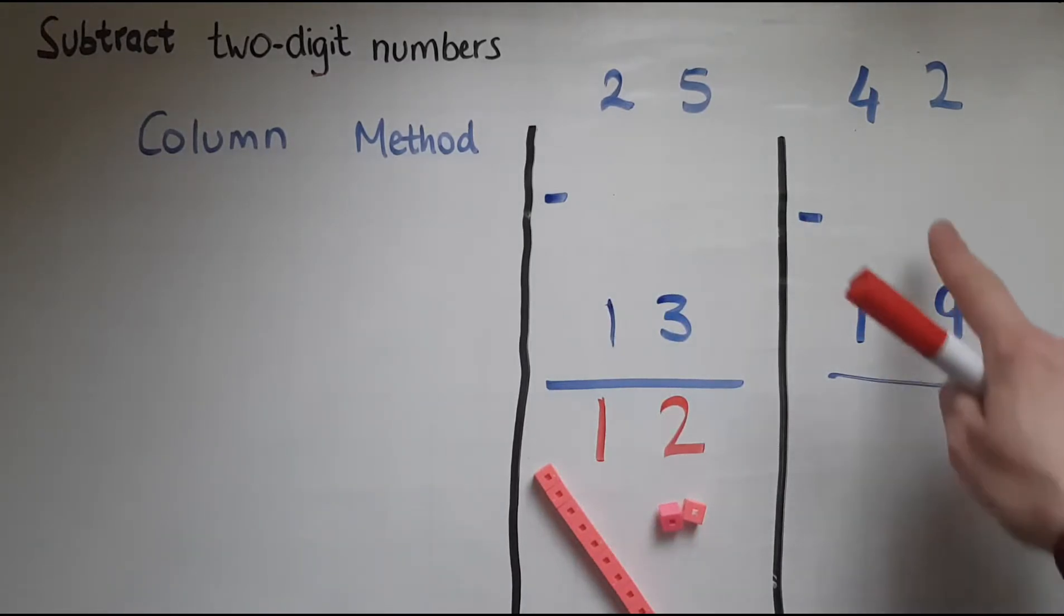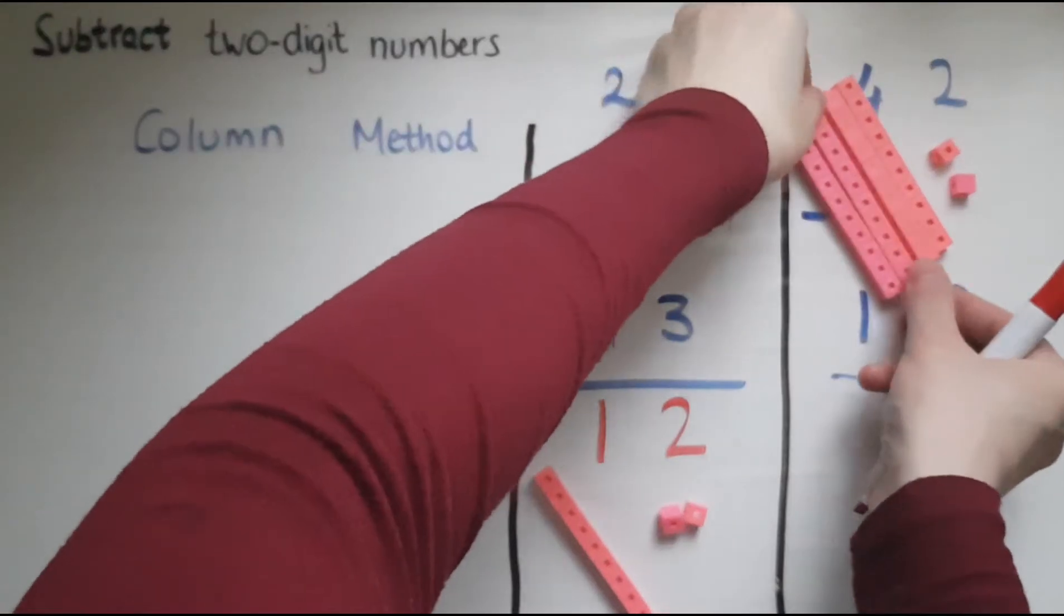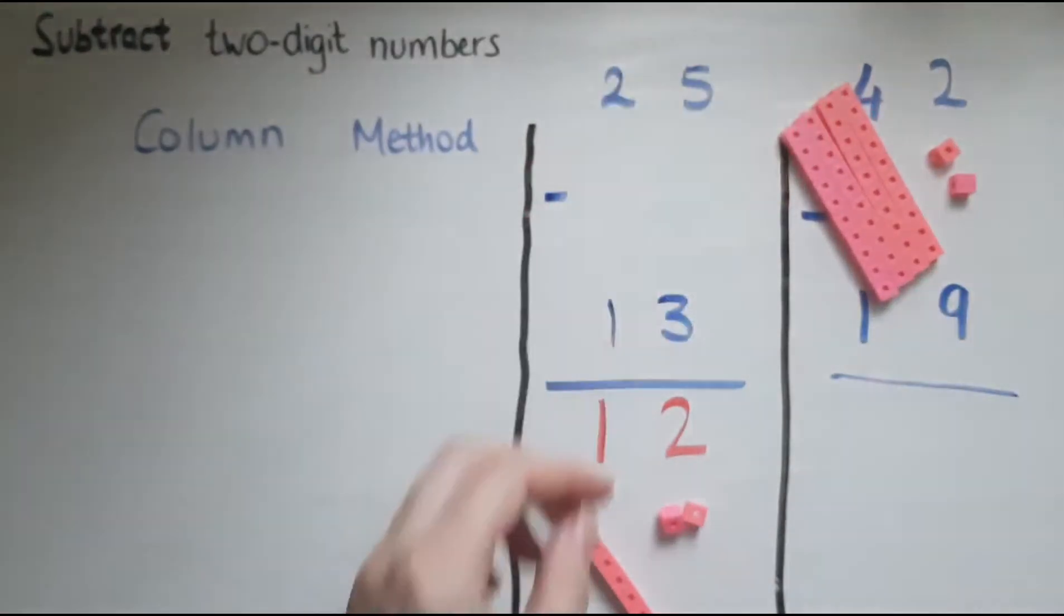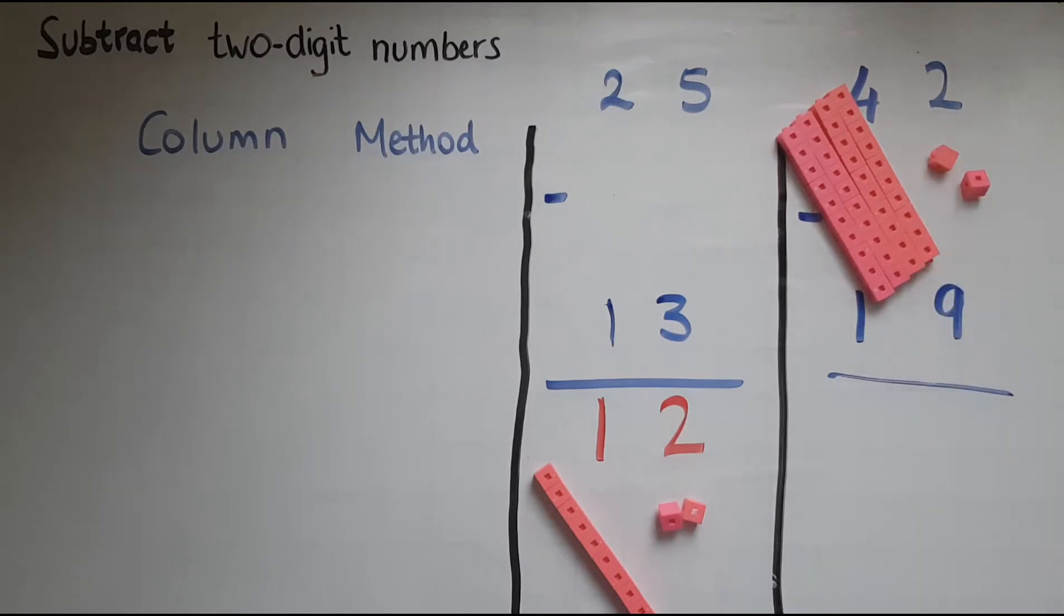Now we've got 42 take away 19. So I'll do the same thing and represent 42 using the cubes. So I have four lots of 10 and two single cubes. I need to take away 19. So nine to take away from two. Am I able to do that? I can take away one or two but not any more than that.